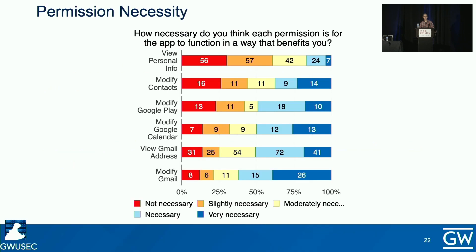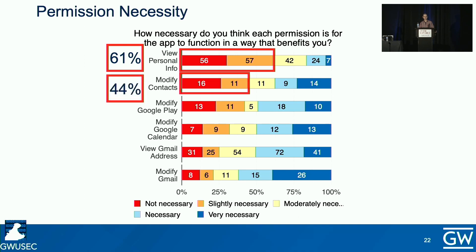We also asked participants to report the necessity of each permission for the app to function. Among the six most prevalent permissions, 61% of participants reported the permission to view personal information to be not necessary or only slightly necessary, and 41% reported the permission to modify contacts to be not necessary or only slightly necessary. Participants found permissions such as modify Google Calendar and view Gmail addresses necessary for app functionality.